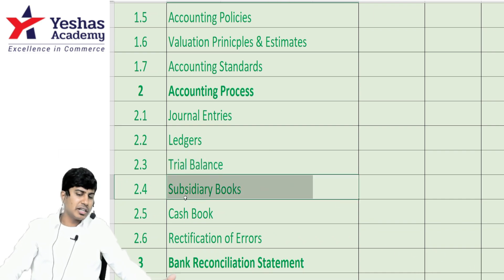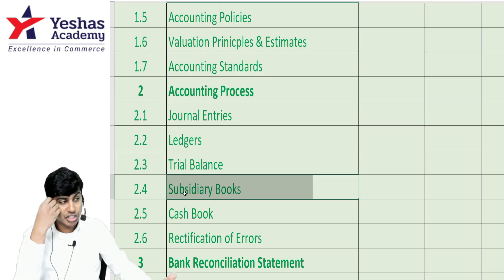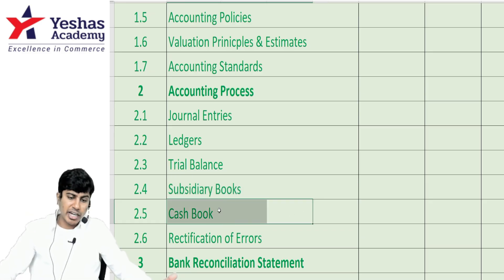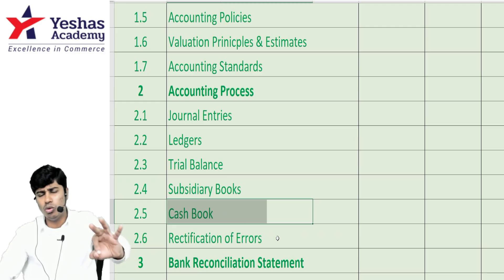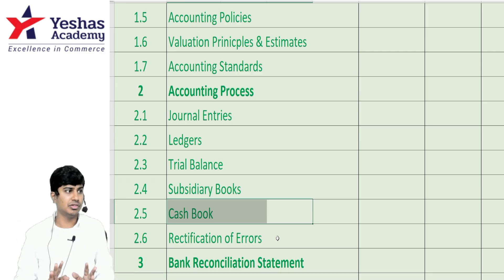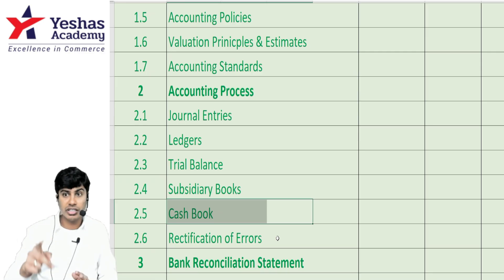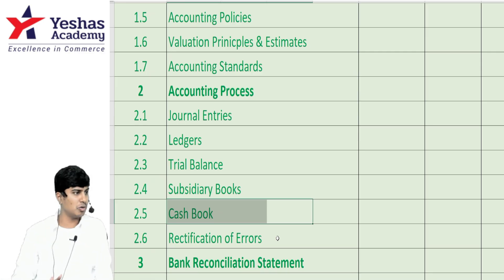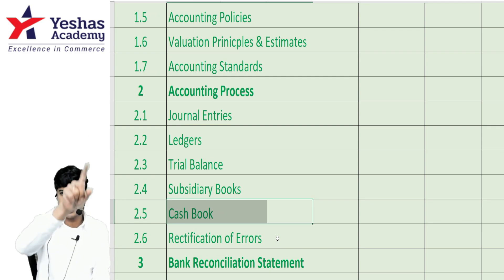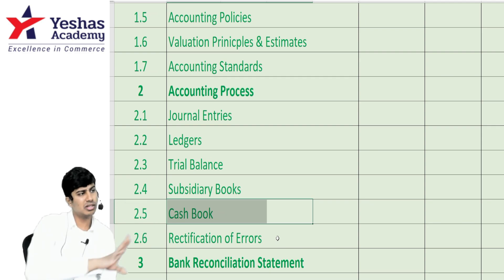For subsidiary books — purchase book, sales book with discounted GST portions — these are very interesting and easy questions. For cash book, remember one blind thumb rule that ICAI wants you to follow: whenever a cheque is received, treat it as cash received. Whenever the cheque is deposited, that's when you call it a bank deposit. When the cheque is received, write in the cash column; next day when deposited, write on the debit/receipt side in the bank column and credit the cash column.